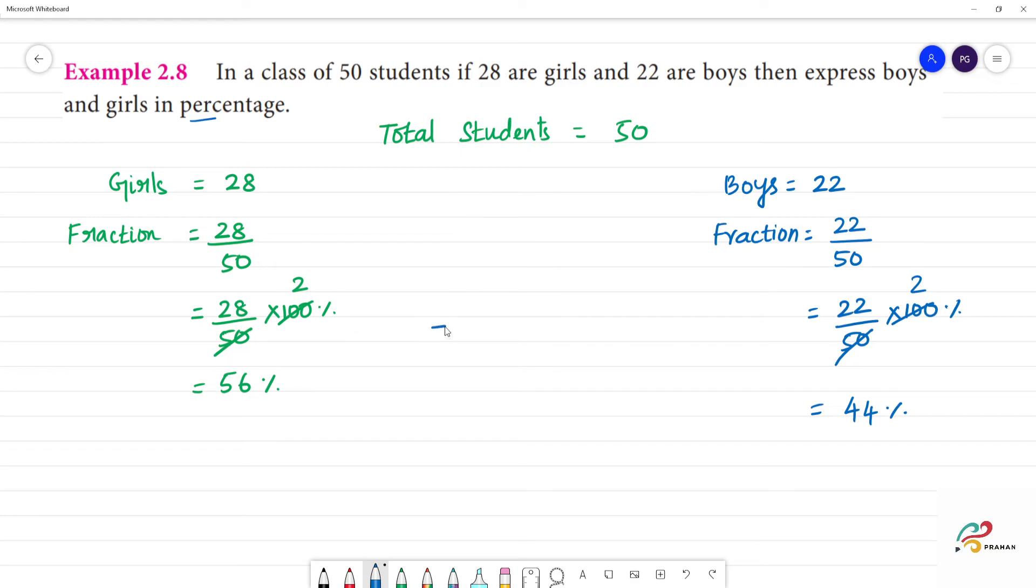Total students. Total percentage. What do we do? 56 percentage plus 44 percentage. That is equal to how much? 100 percentage.